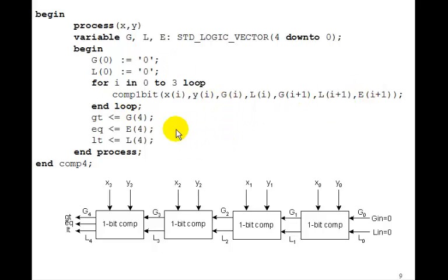And then the fourth time through, i is equal to 3. So we have x3, y3, g3, and l3 as inputs. And the outputs are g4, l4, and e4. Well, we've made all four of them now. So greater than is just going to be g4. The equal is the e4, and less than is the l4. So that's it. We've made this four-bit comparator using this procedure, comp one bit that we just called four times.